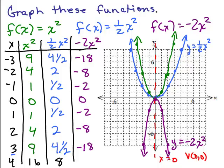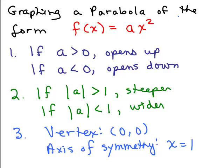To summarize: to graph a parabola of the form f of x equals ax squared, if a is greater than 0 it opens up, and if a is less than 0 it opens down. If the absolute value of a is greater than 1 — like 2, negative 2, 3, or three halves — it's a steeper graph. If it's less than 1 — like one third, one half, or negative one half — it's a wider parabola. The vertex for all of these is (0, 0) and the axis of symmetry is the vertical line x equals 0.